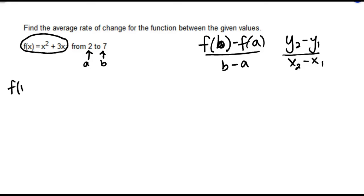Now f(b) is f(7). So we'll substitute 7 into our function f(x) to get 7² + 3(7). 7² is 49, 3 times 7 is 21, and 49 + 21 is 70.